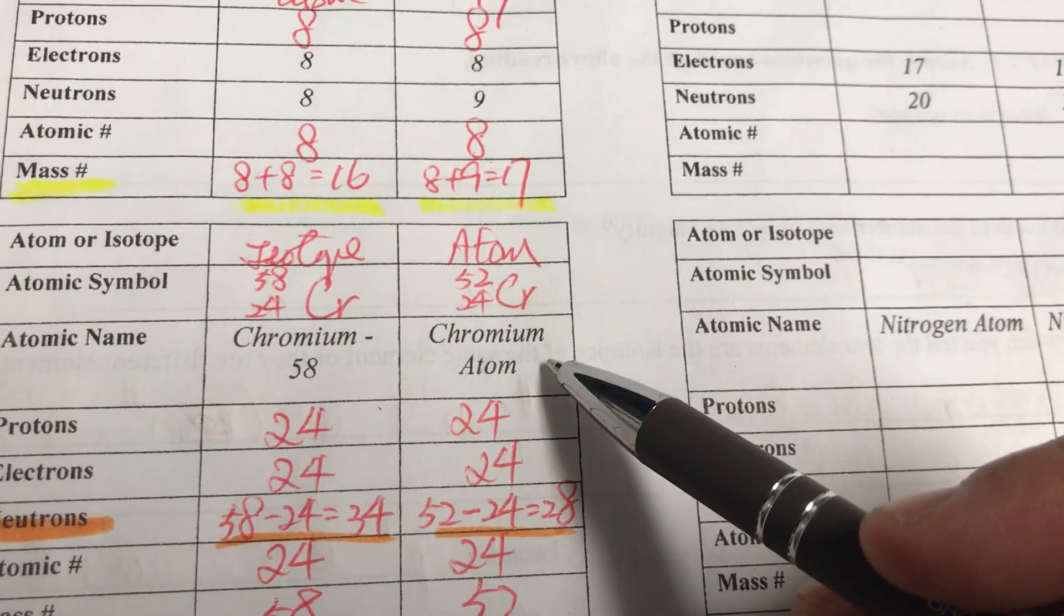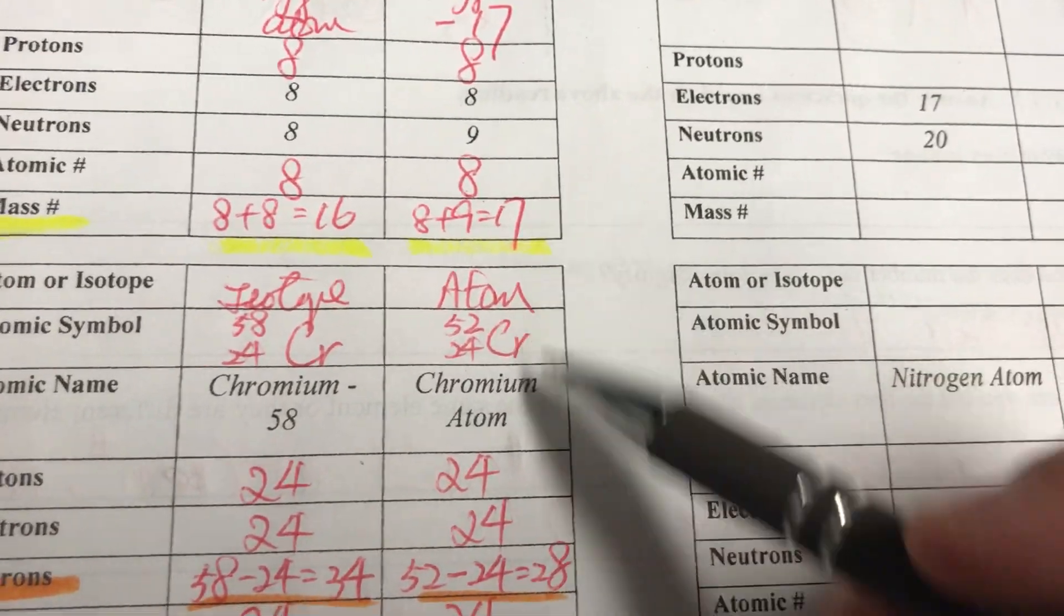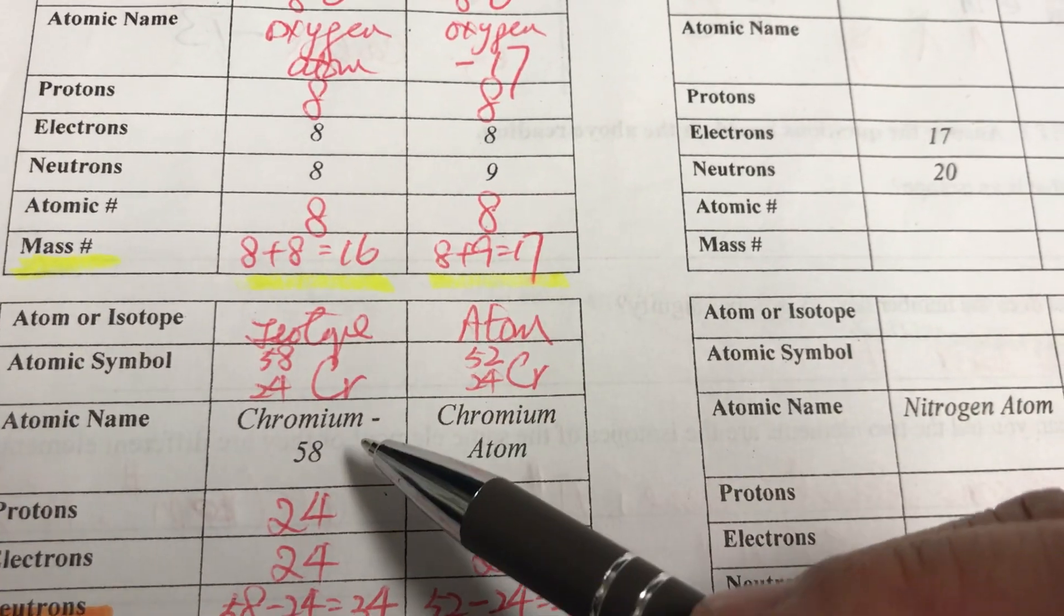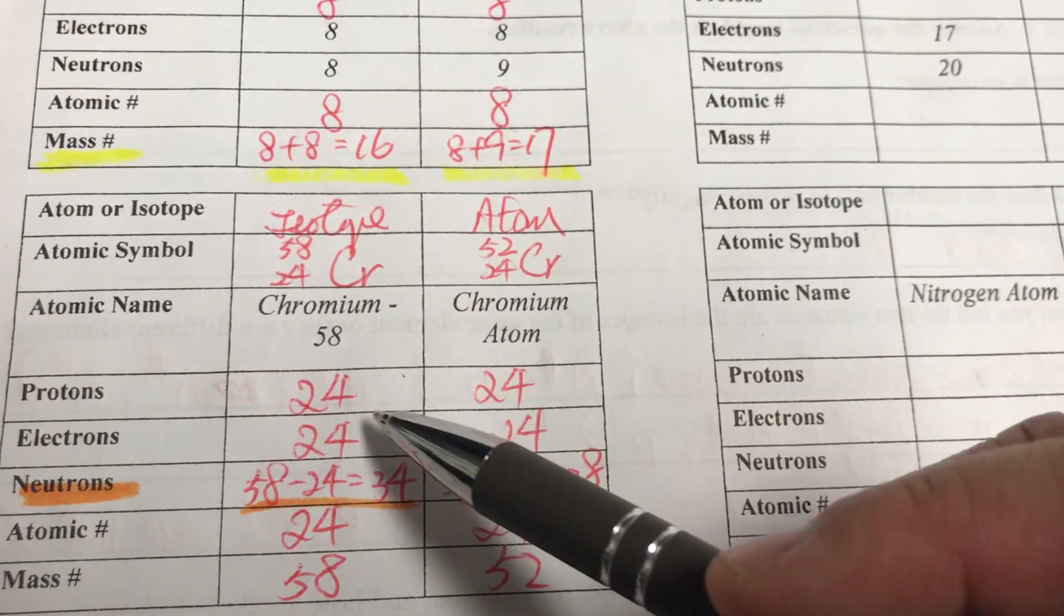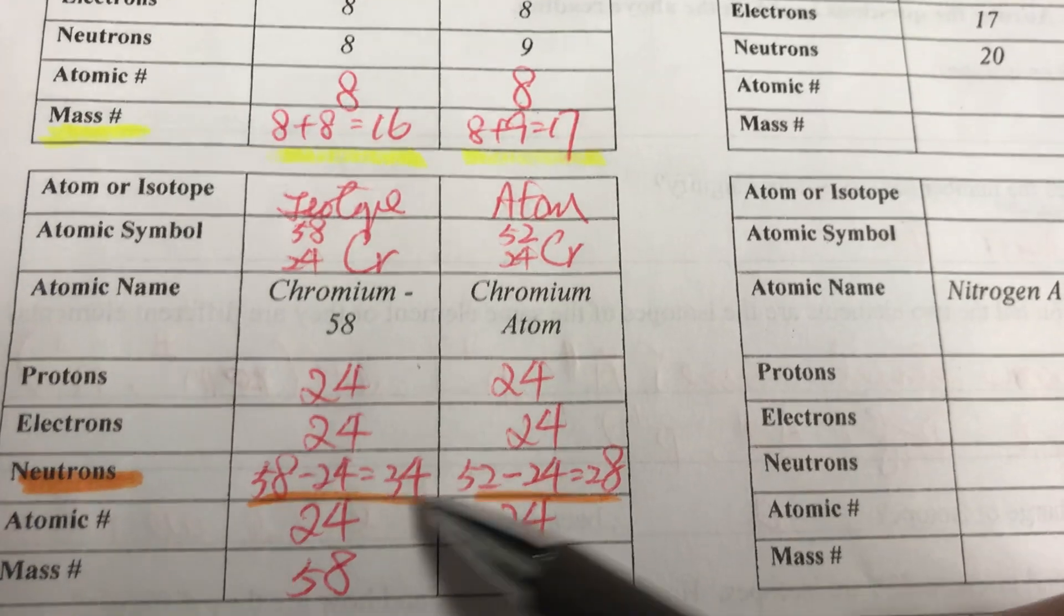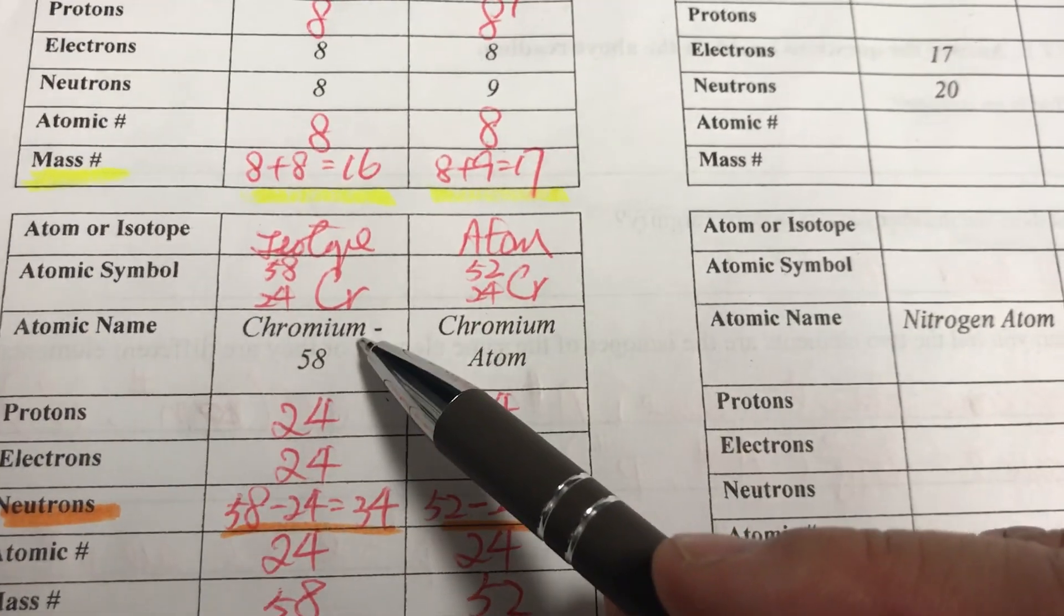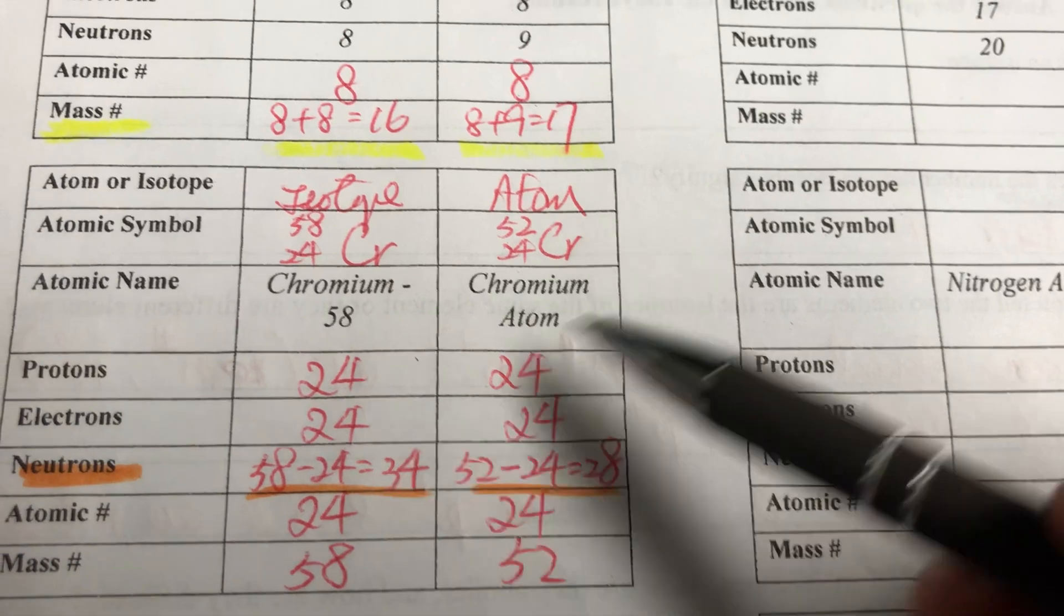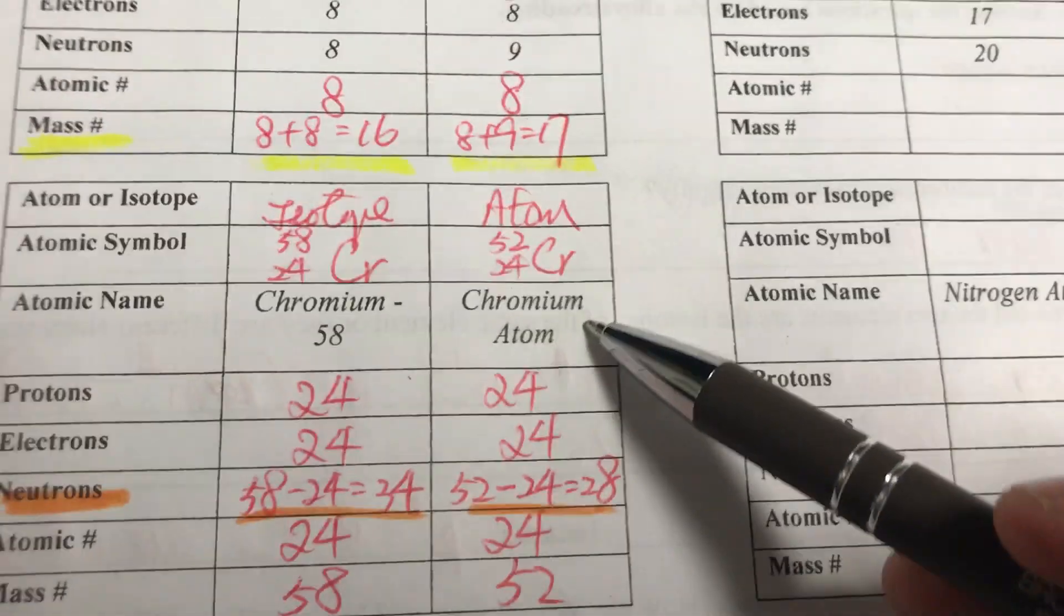And here we were told chromium 58 and chromium atom. So it obviously tells you that this is an atom and this will be an isotope. So if you look up chromium, we can tell the proton is 24, electron then will be 24, atomic number will be 24. And chromium 58 tells me that the mass number is 58.